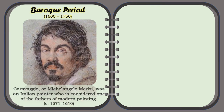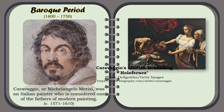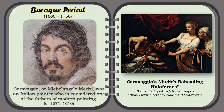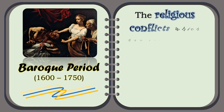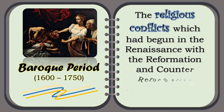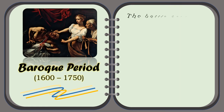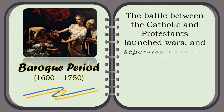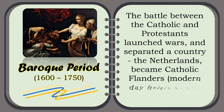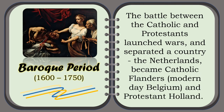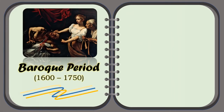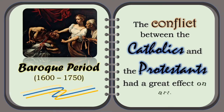The next prominent artist was Michelangelo Merisi, also known as Caravaggio. He was an Italian painter who is considered one of the fathers of modern painting. For example, Caravaggio's Judith Beheading Holofernes. The religious conflicts which had begun in the Renaissance with the Reformation and Counter-Reformation continued well into the 17th century. The battle between the Catholics and Protestants launched wars and separated a country. The Netherlands became Catholic Flanders — that is, modern day Belgium — and Protestant Holland. Thus, the conflict between the Catholics and the Protestants had a great effect on art.